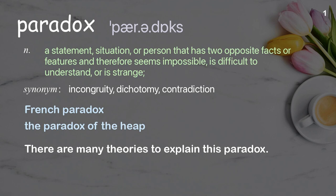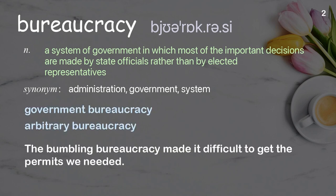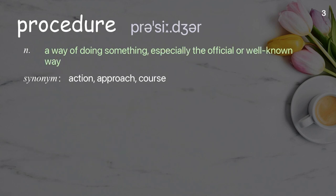Bureaucracy: a system of government in which most of the important decisions are made by state officials rather than by elected representatives. Examples: government bureaucracy; arbitrary bureaucracy; the bumbling bureaucracy made it difficult to get the permits we needed.